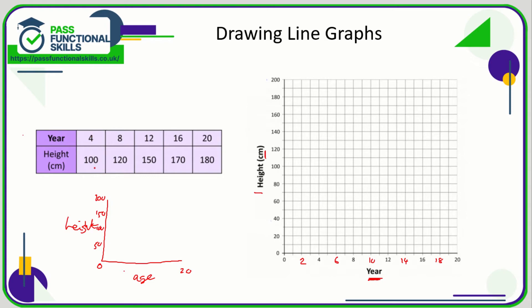So what we need to do is: year 4 equals 100 centimeters, so that is that point there. Year 8, 120 is right here. Year 12, 150 is there. Again, if you use a ruler it makes sure that you're definitely staying on the right line rather than accidentally drifting onto perhaps year 11 or year 13. Year 16 is 170, which is that point there, and year 20, which is here, is 180.